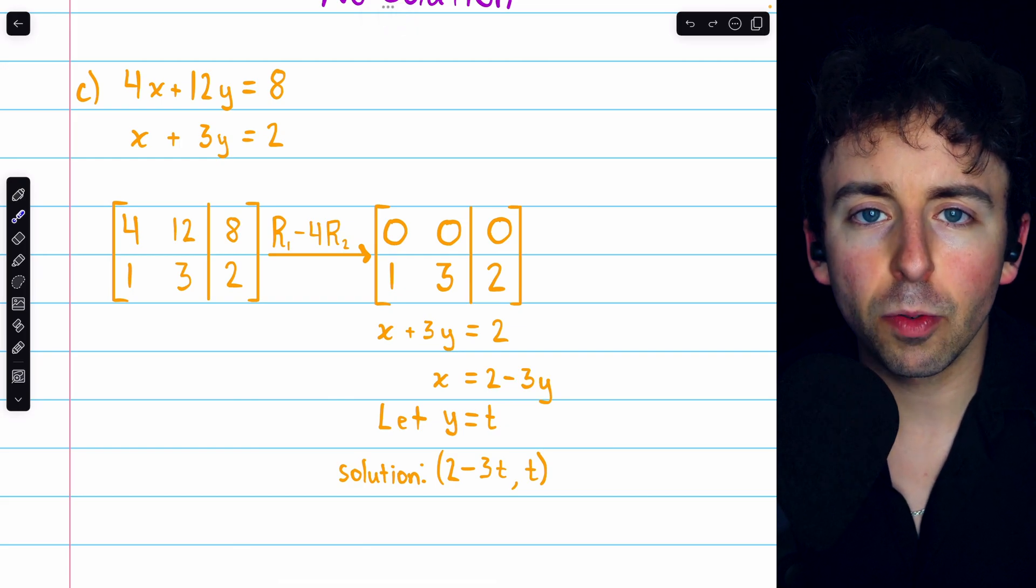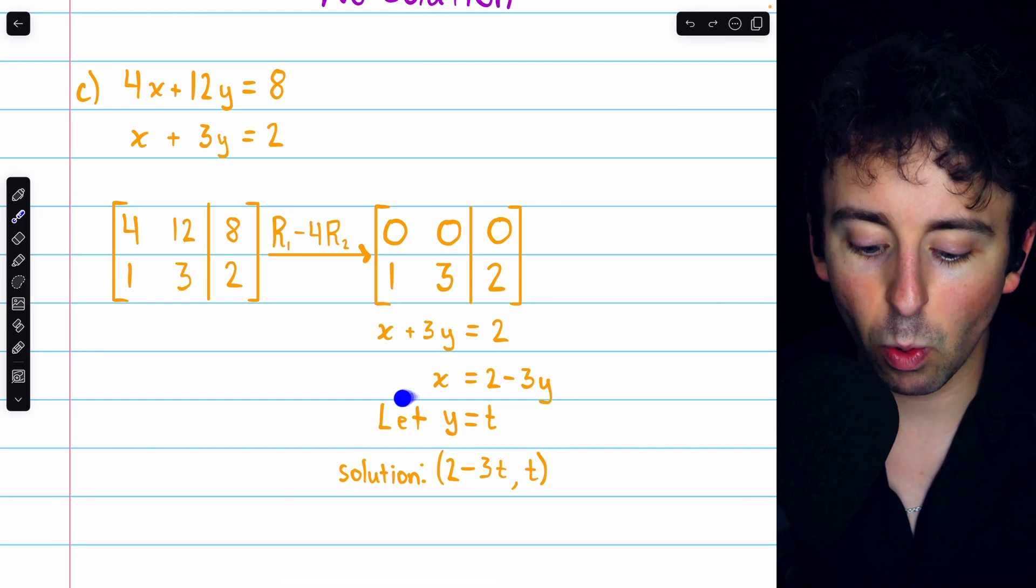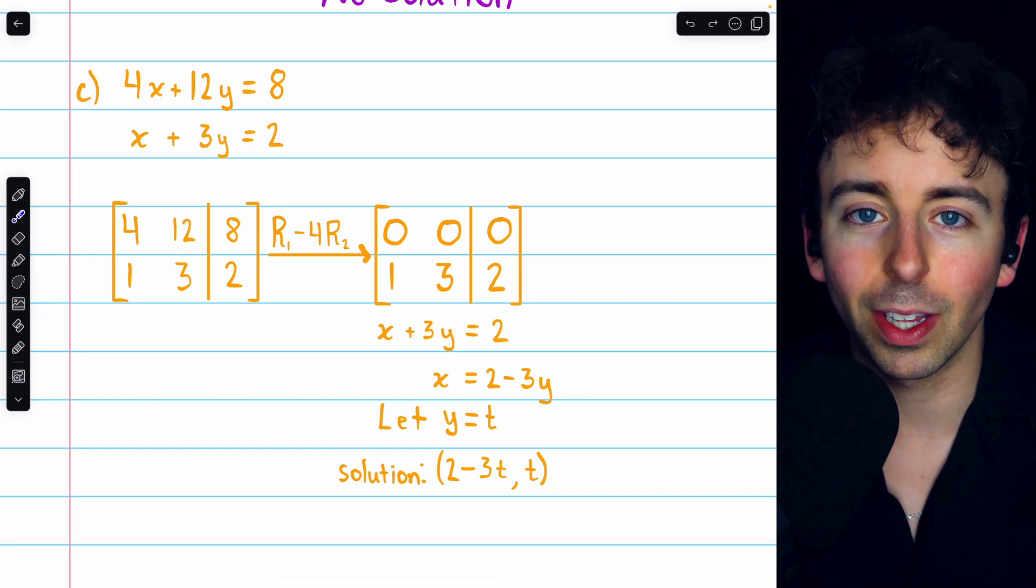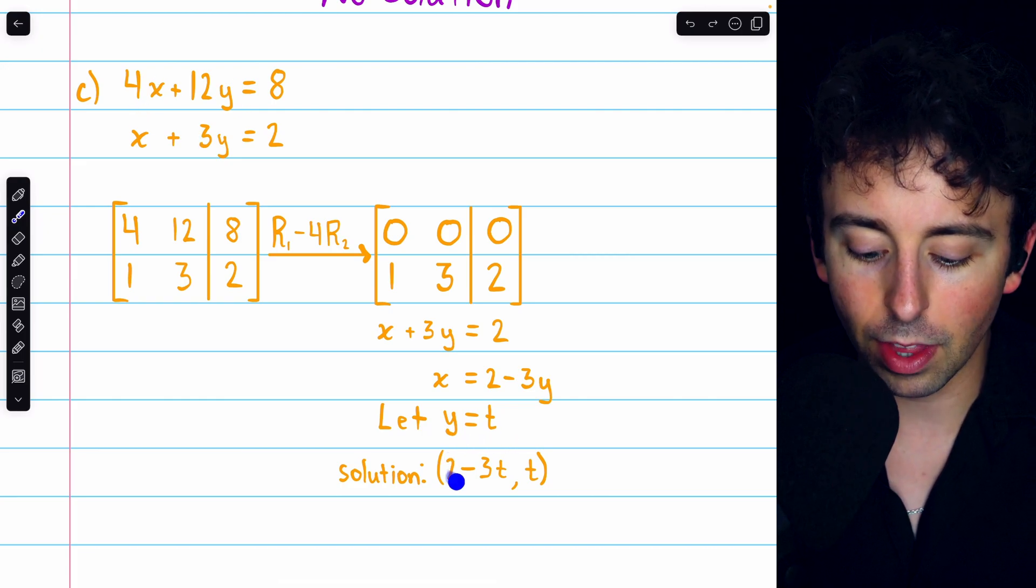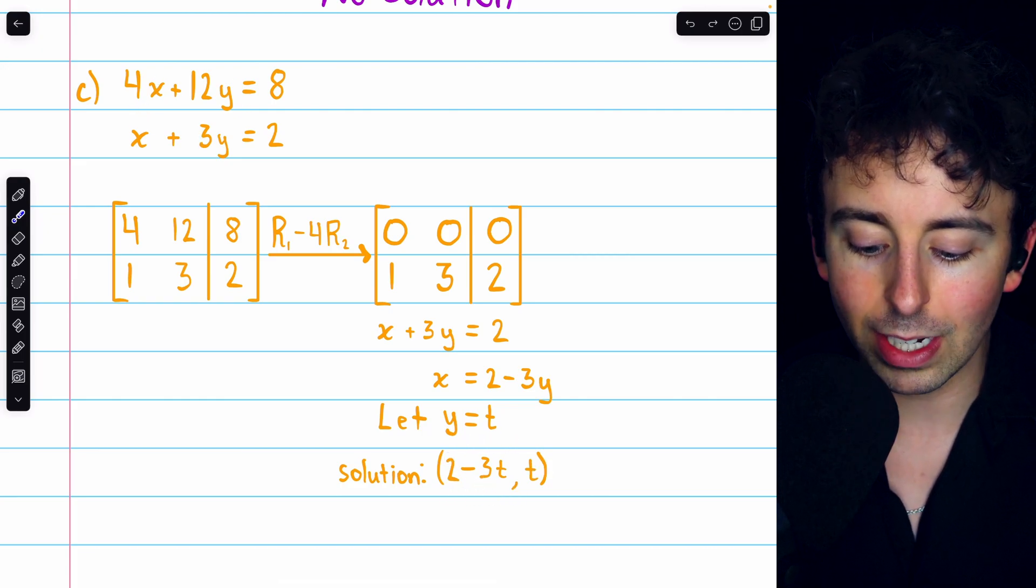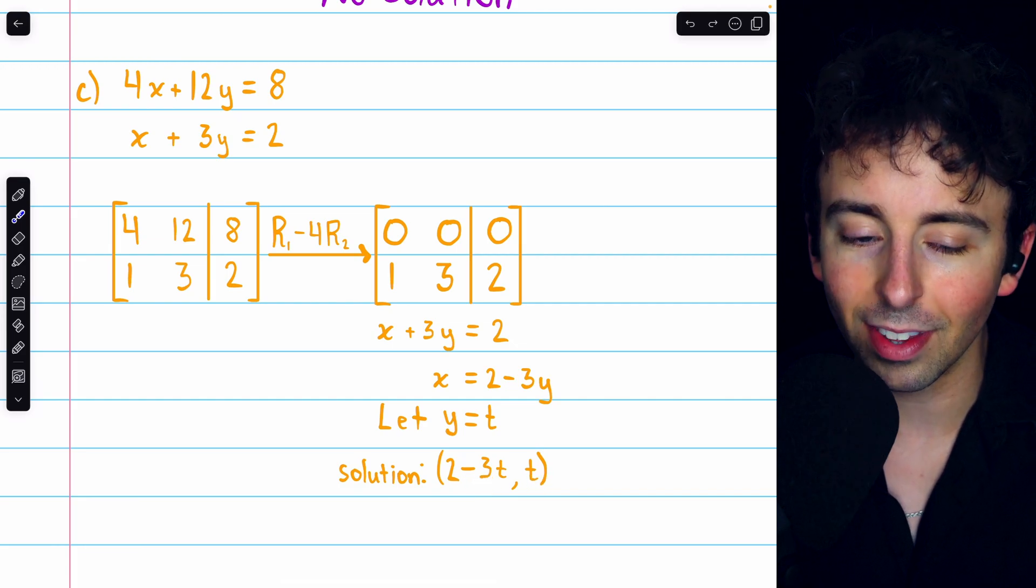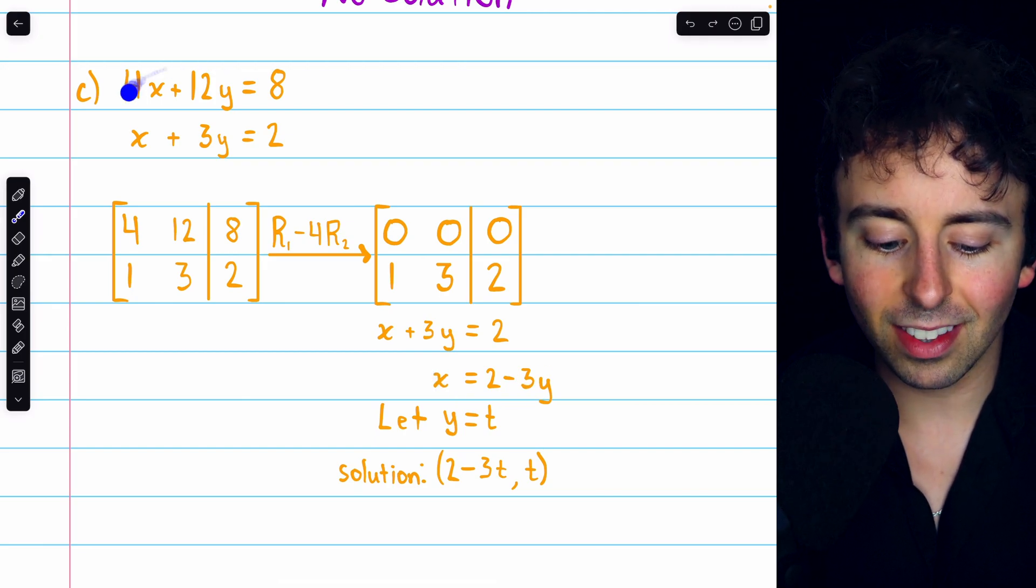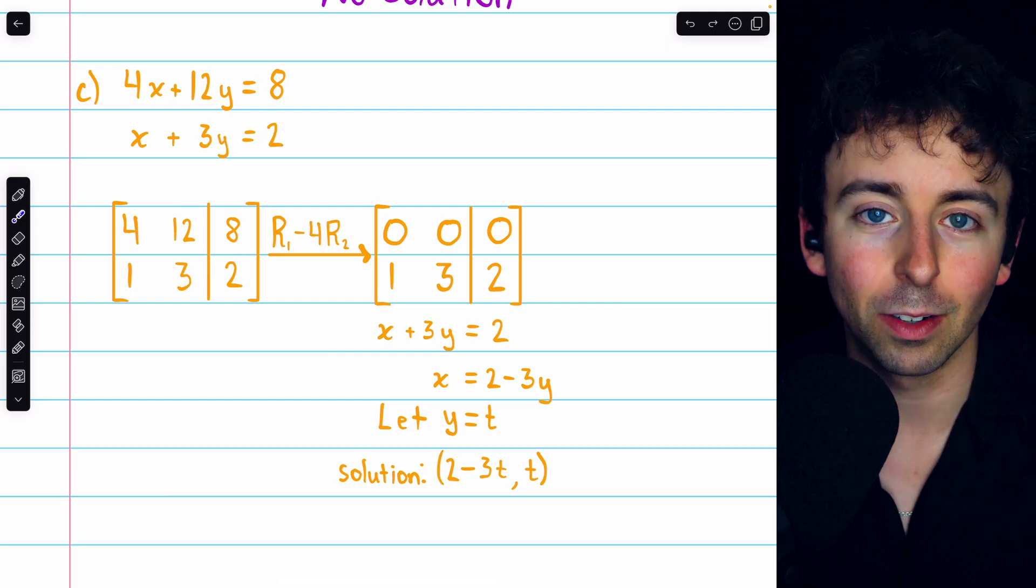It's typical in linear algebra that we will assign free variables to arbitrary parameters. So we may say, let y equal t. t can be whatever it likes, that tells us what y is, and then we can use that to calculate x. So we could say that the solution to this system is any point of this form, 2 minus 3t. That's directly from that equation with x, but replacing y with t, and t. So x equals that, y equals that. There are infinitely many solutions all lying on this line. That's because this system just consists of two lines that are exactly the same. So they intersect everywhere.